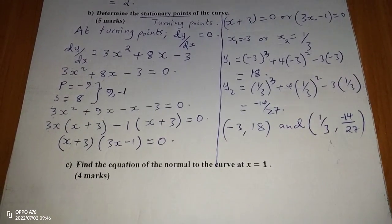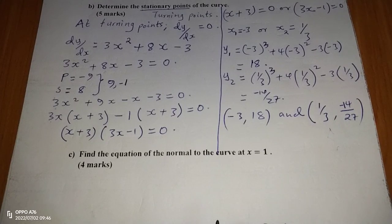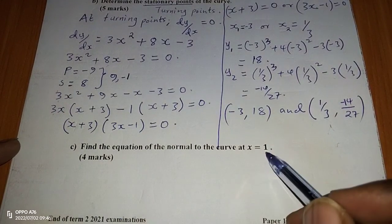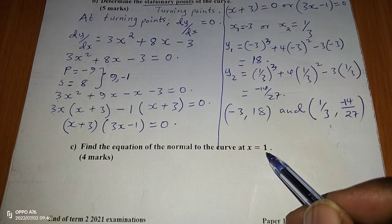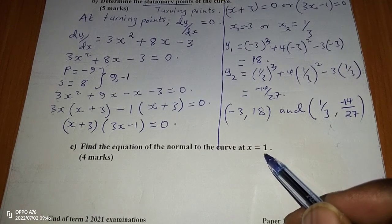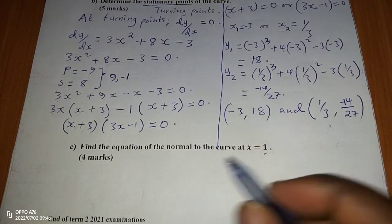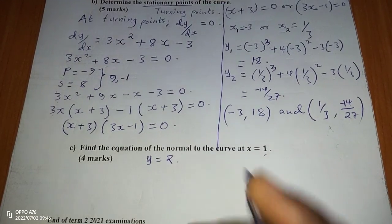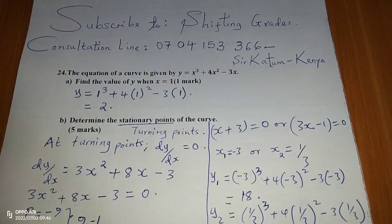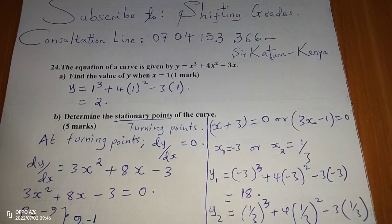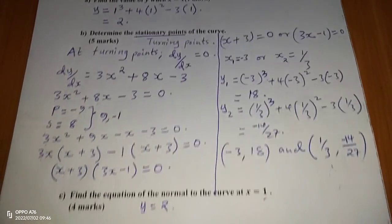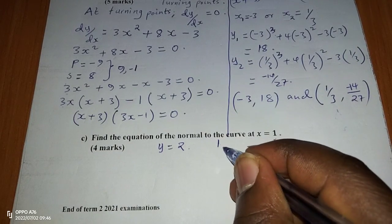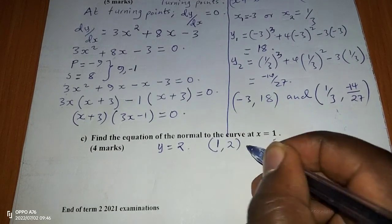For the last part, we find the equation of the normal to the curve at x equals 1. From part (a), when x equals 1, y equals 2, so the point on the curve is the coordinate 1, 2.